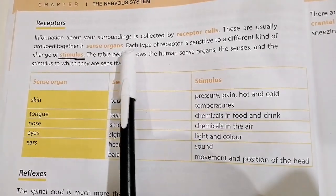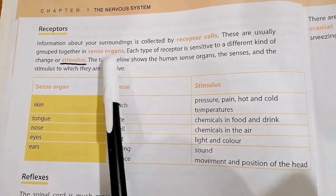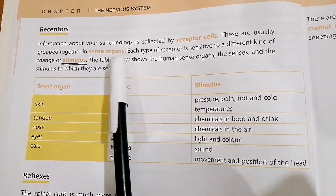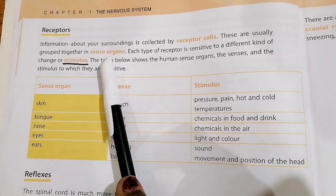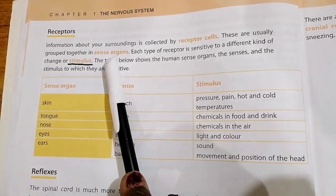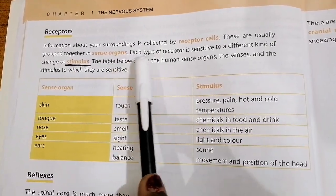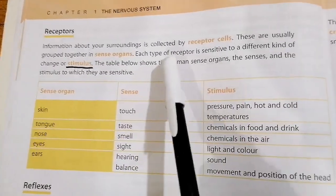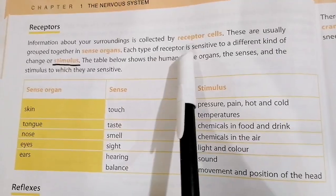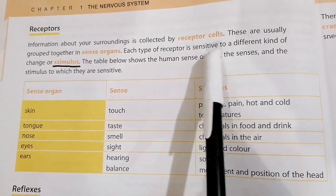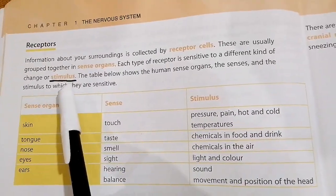For environmental changes, there are also receptors. We know about the receptors, we know about the grouping, and we know what changes are happening outside. Each type of receptor is sensitive to a different kind of change or stimulus.